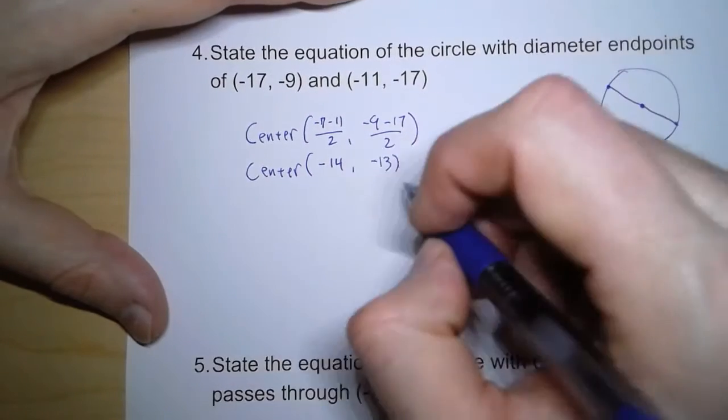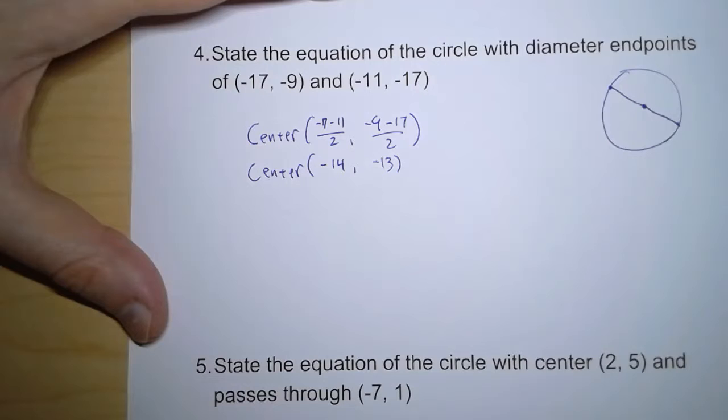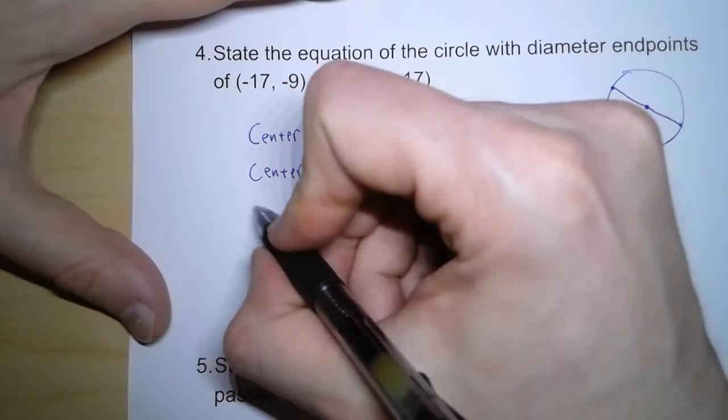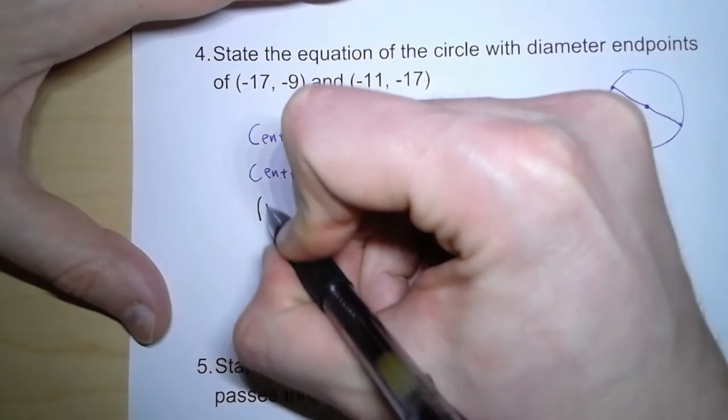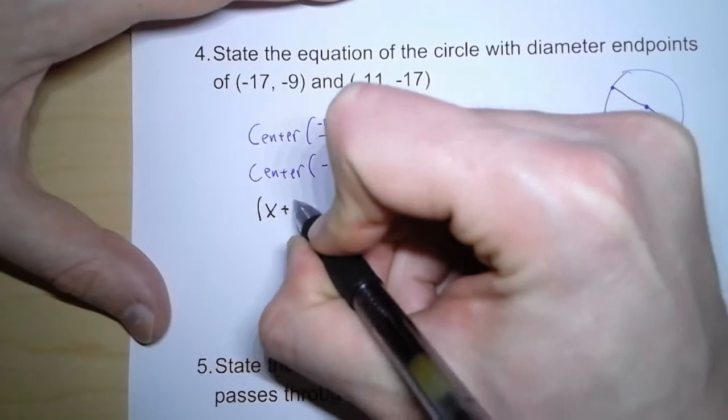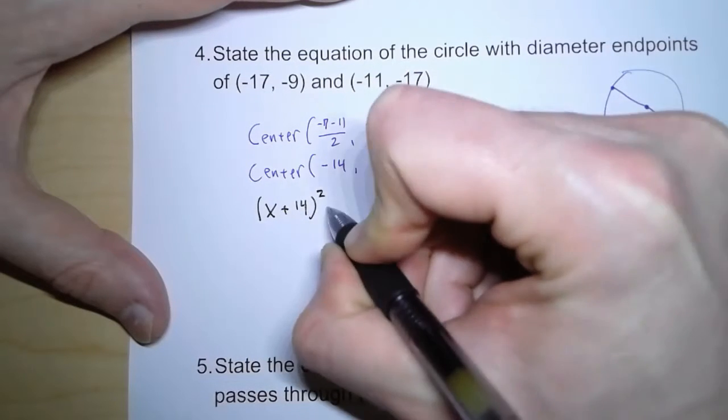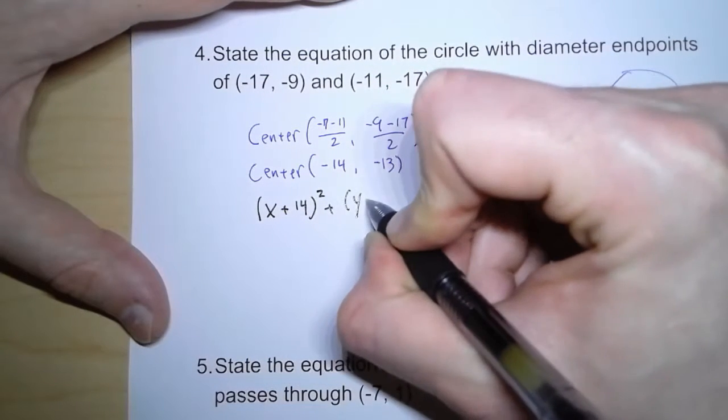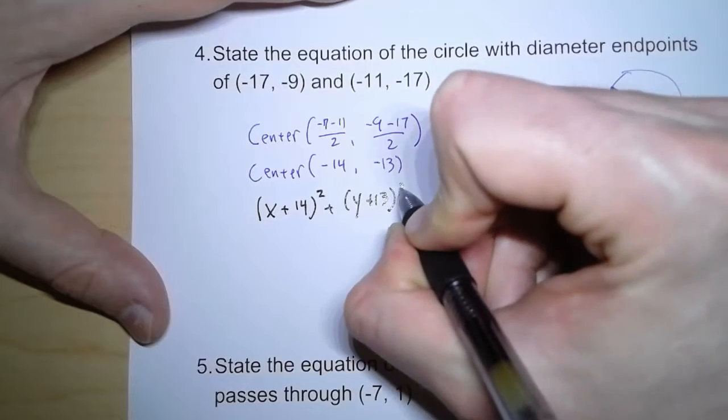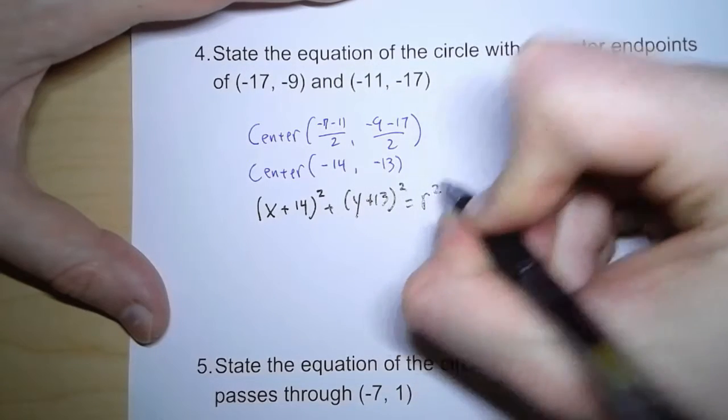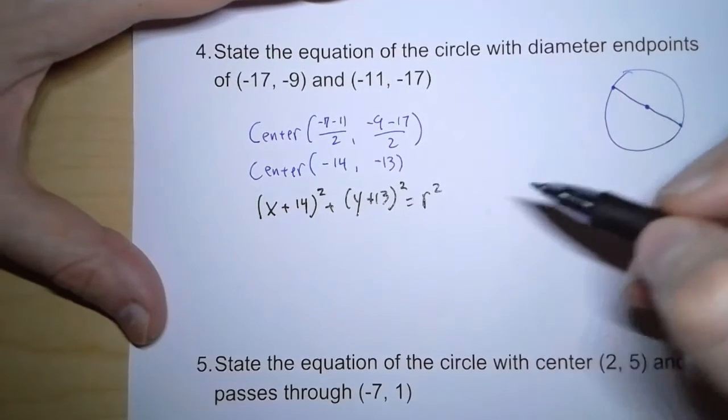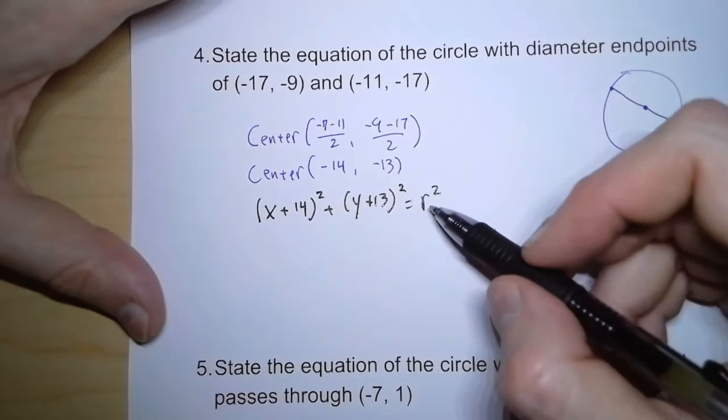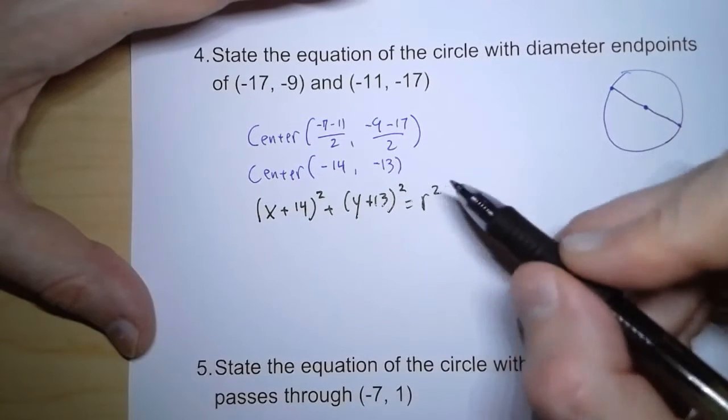Now one thing we can do is, with just this information, we can write this much of our equation. We get x plus 14 squared, plus y plus 13 squared, equals, but we don't know the radius, so we have to leave that as r squared.